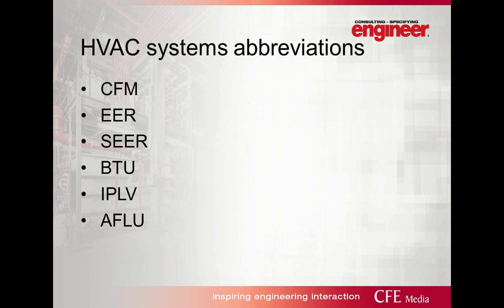Next, we're going to talk about abbreviations. We're engineers — we like to rattle off these things while talking to clients or other engineers, sometimes without realizing it. Just to make sure that there's a baseline created: CFM is cubic feet per minute; EER is energy efficiency ratio; SEER is seasonal energy efficiency ratio; BTU is British Thermal Unit; and other abbreviations such as IPLV, NPLV, and AFUE also exist. We need to make sure that when we're talking to people, we're explaining what these abbreviations mean.